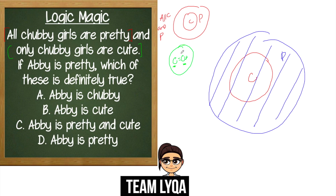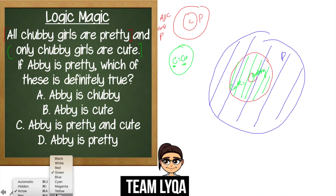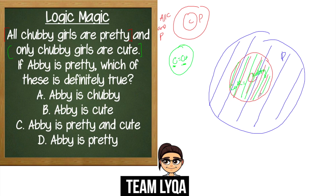Before we put this into the main diagram, we need to think: is there already an existing chubby or cute circle in the diagram? Yes — the chubby circle is already there. Since only chubby girls are cute, whatever circle represents chubby, that same circle also represents cute. So we can color that circle green to represent cute as well, and also color the inner part red. This means everything inside that inner circle is cute, chubby, and pretty.